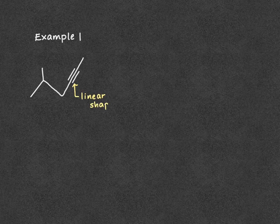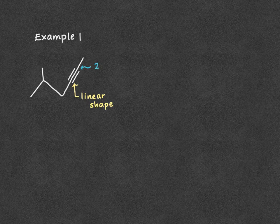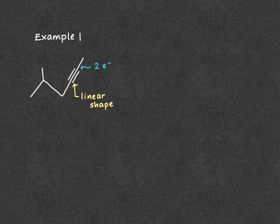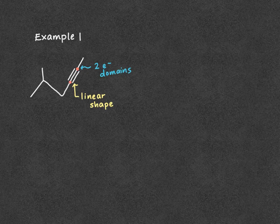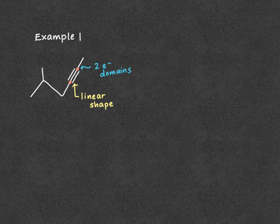Because there are only two electron domains on each carbon, the carbons will have a linear shape. And so there is a carbon here and another carbon here. It's a little confusing to look at, so sometimes adding little dots will help you with the naming.